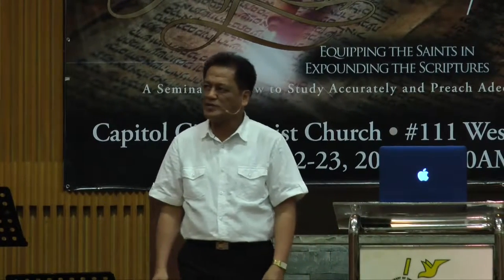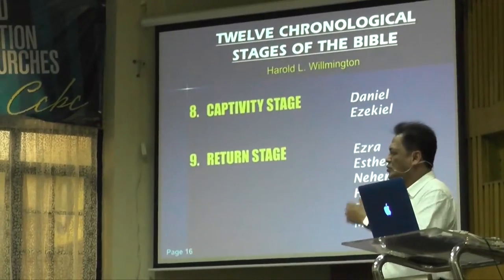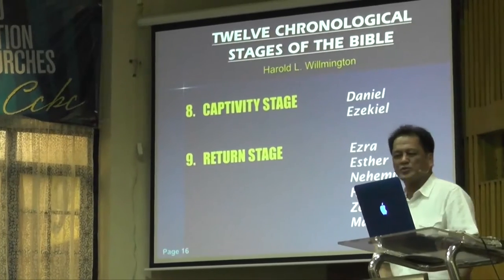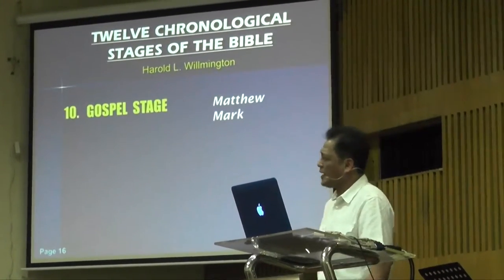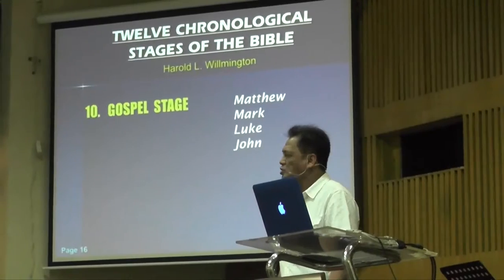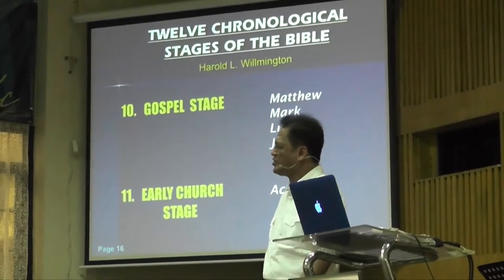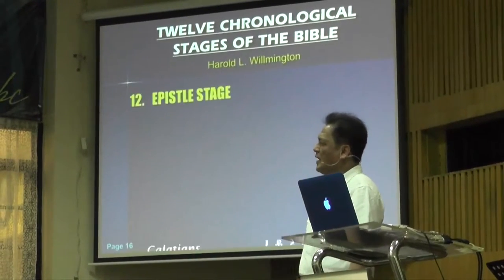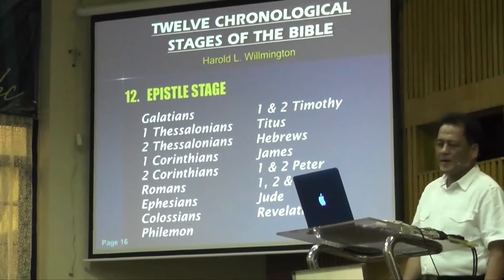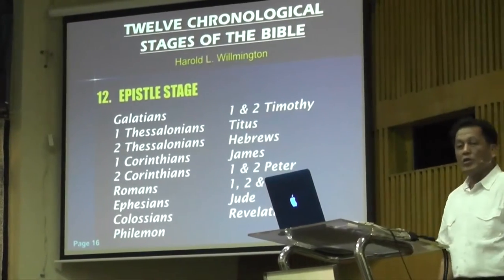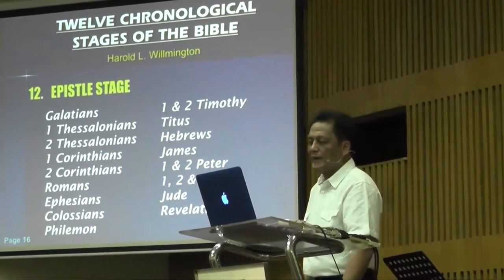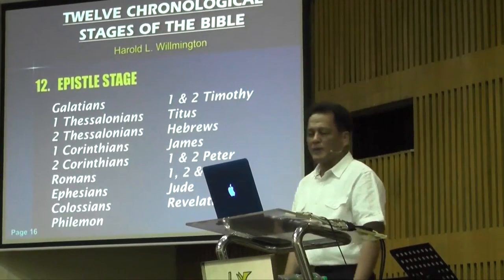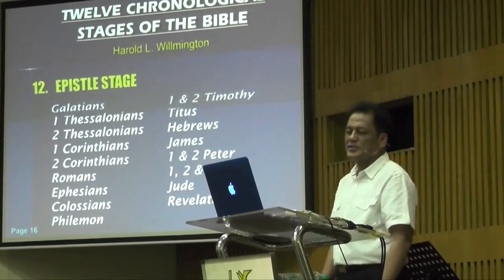And then, of course, you have the captivity stage — you only read two books during the captivity stage. The return stage — of course, those six books. And then the New Testament — that's a lot easier to divide. You have the four gospels, the early church stage, and then the epistle stage. Chronological gap — you have resources there in your DVD, the different commentaries. And then, the geographical gap — twelve atlases in the DVD.